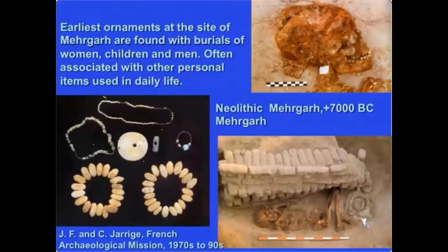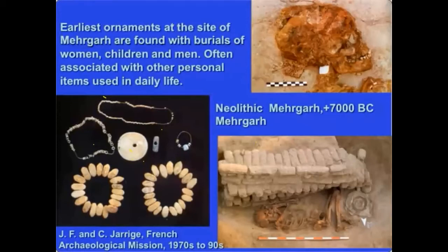The earliest ornaments during the early food-producing era are found at the site of Mehrgarh, excavated by the French archaeological mission. The burials at Mehrgarh were filled with ornaments, a pattern starting at about 7000 BC, but it disappears after a while. So it begins in the early Neolithic, but later on people did not put ornaments in the ground — there was a clear transition and change in the use of ornaments for burial in the Indus region.